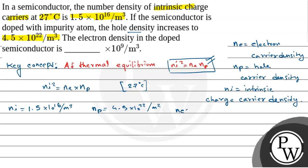Ne equals Ni squared divided by Np. That equals (1.5 × 10^16)² divided by 4.5 × 10^22.